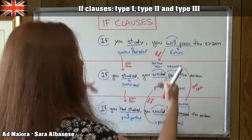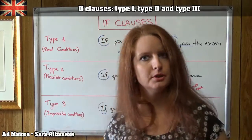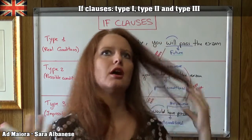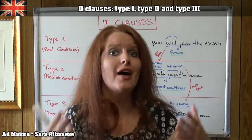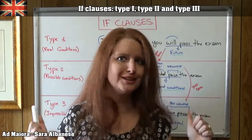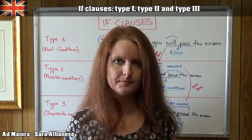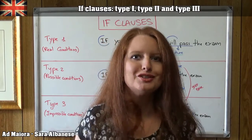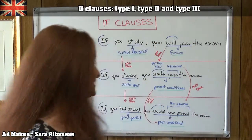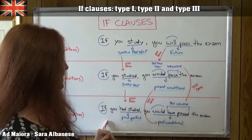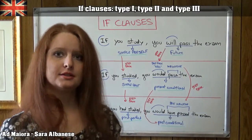Type 3 covers impossible conditions. When are we talking about an impossible condition? When something could have happened in the past but it didn't — so it isn't possible anymore. It's past; it didn't go that way, so we can't change it. Back to our example: 'If you had studied, you would have passed the exam.'